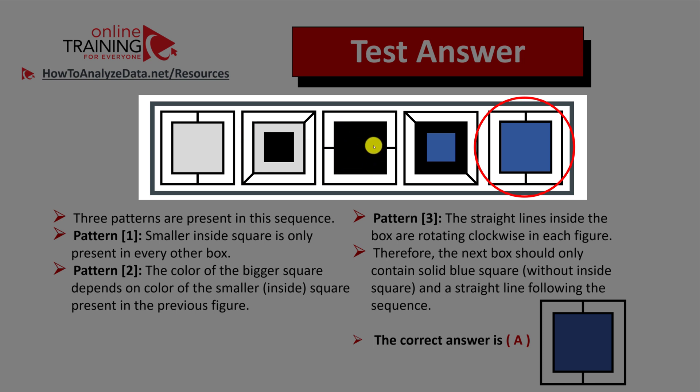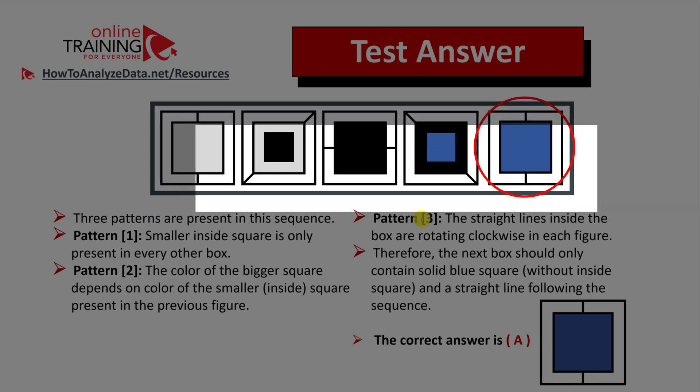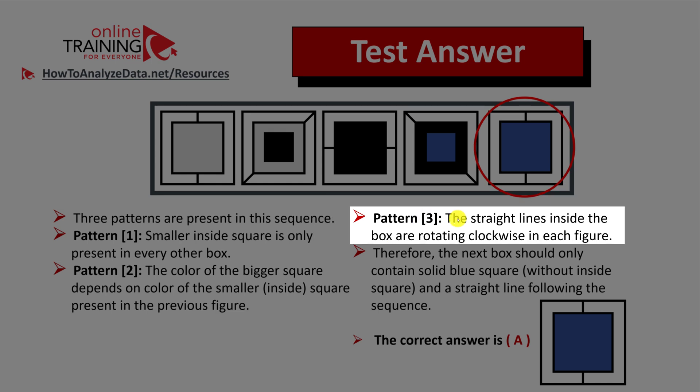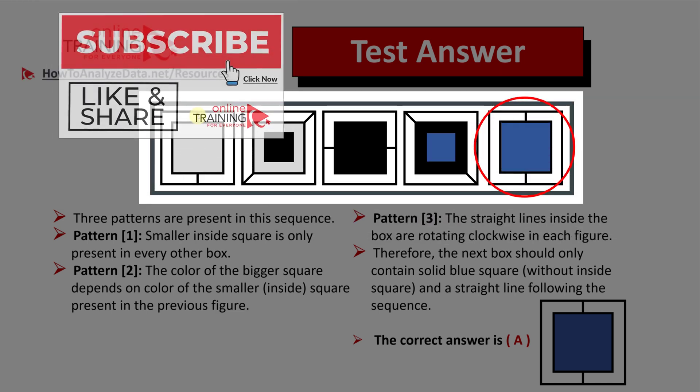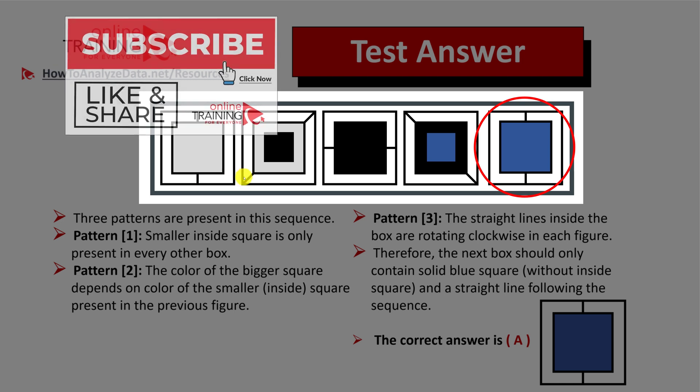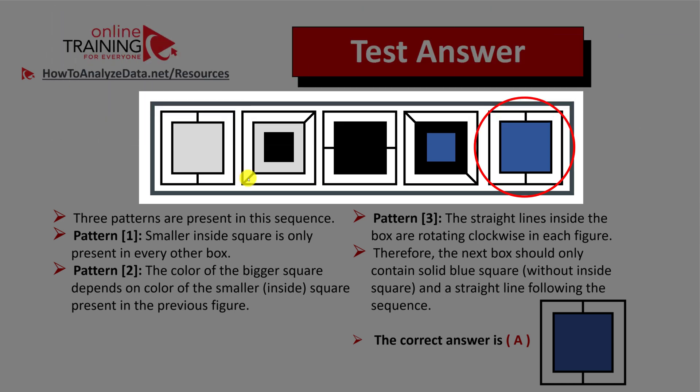Pattern number three is the pattern of straight lines. You see that on the background there is a straight line here and the straight line is present in every figure. If you look closely, you will see that the straight line rotates clockwise.